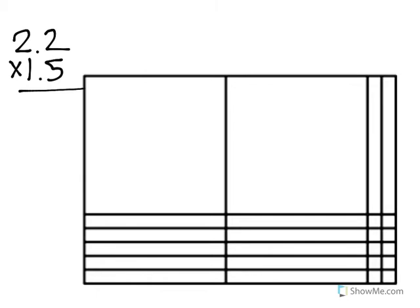So the last problem that I am going to solve is 2.2 times 1.5. So again I am going to use an area model, but if you notice, this area model looks slightly different. So the way that I need to think about this is I still need 4 boxes, because I have a 2-digit number here and I have a 2-digit number here.